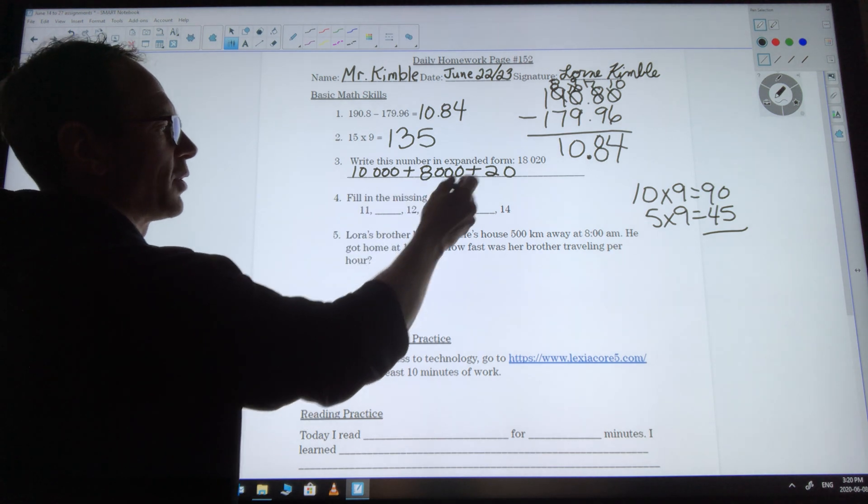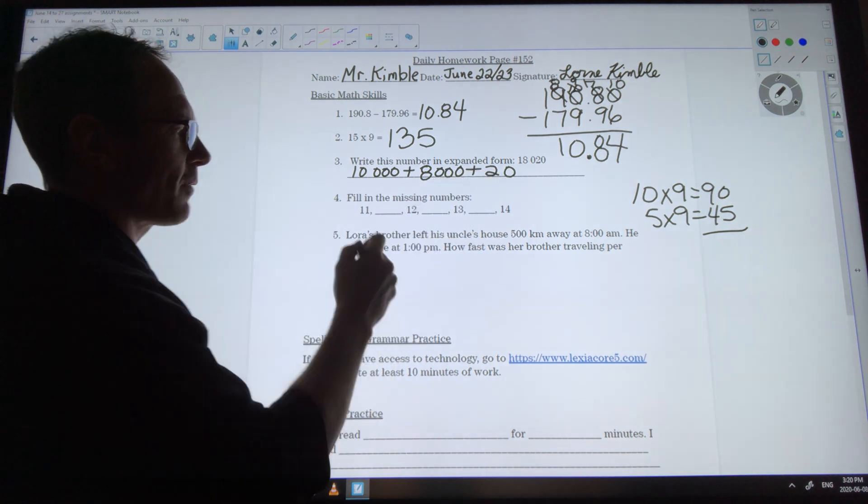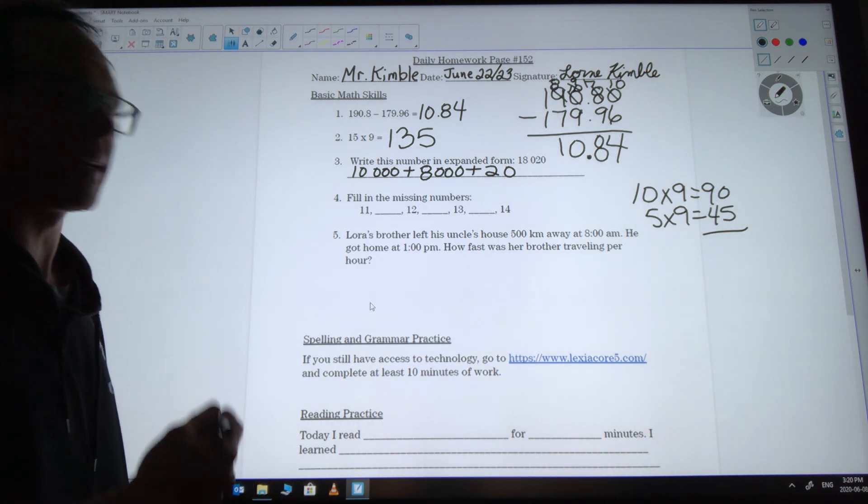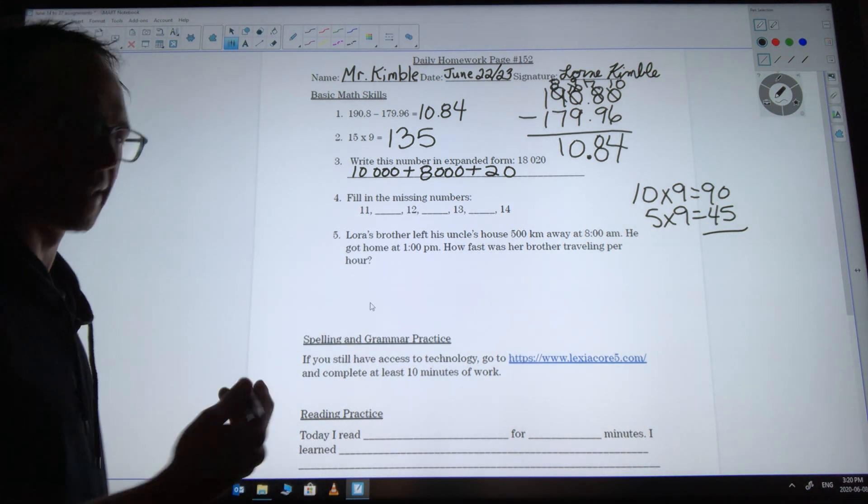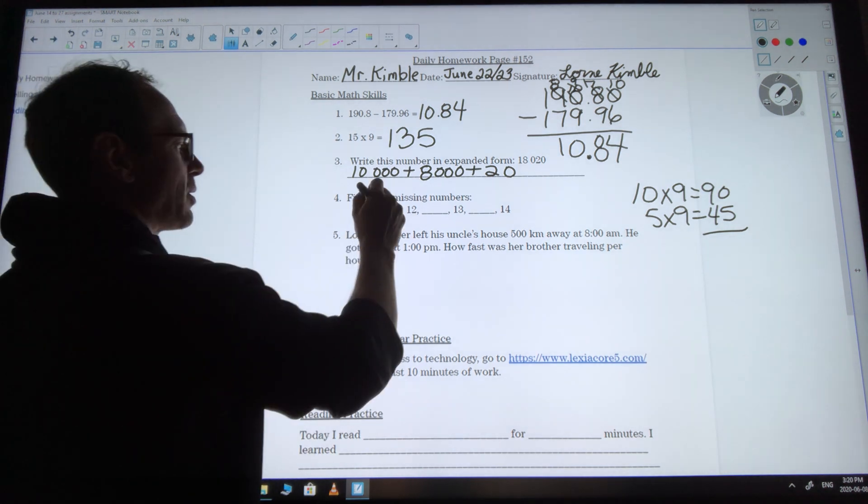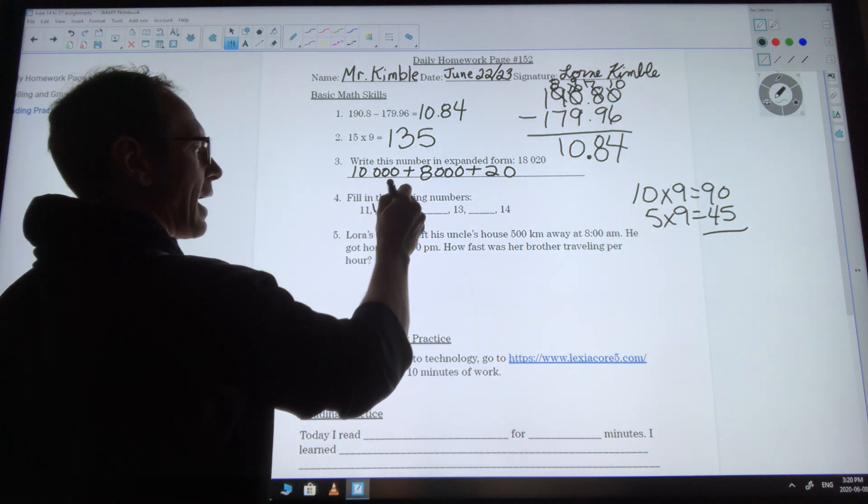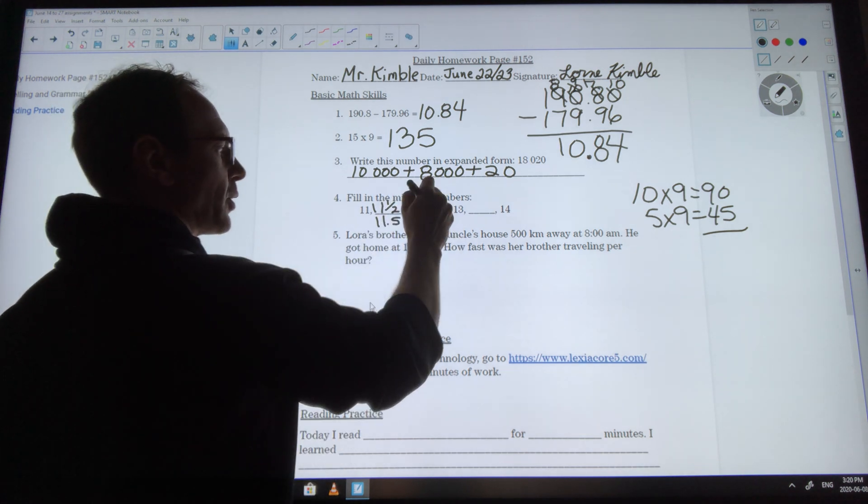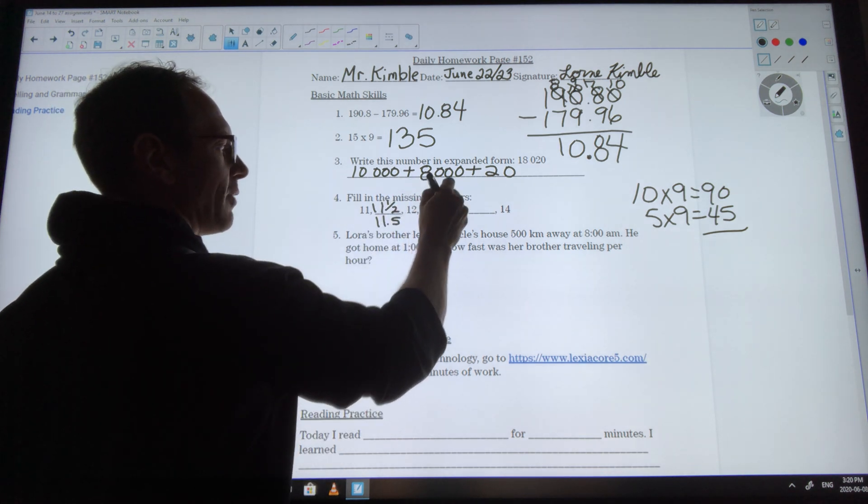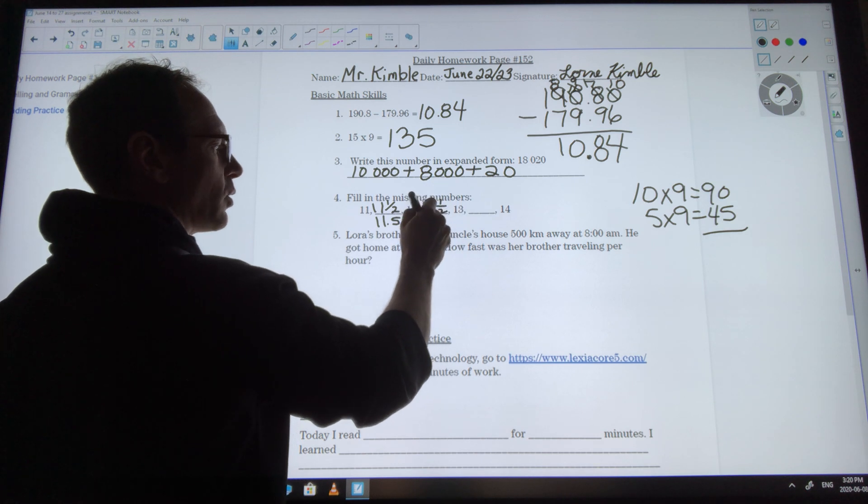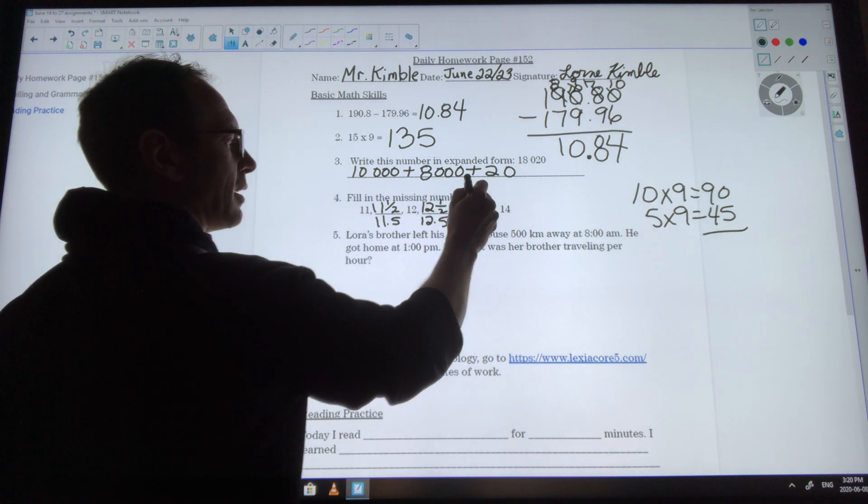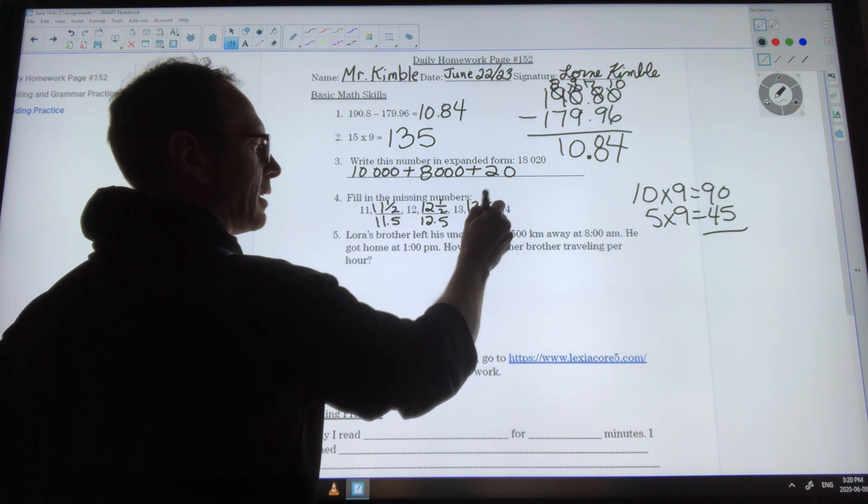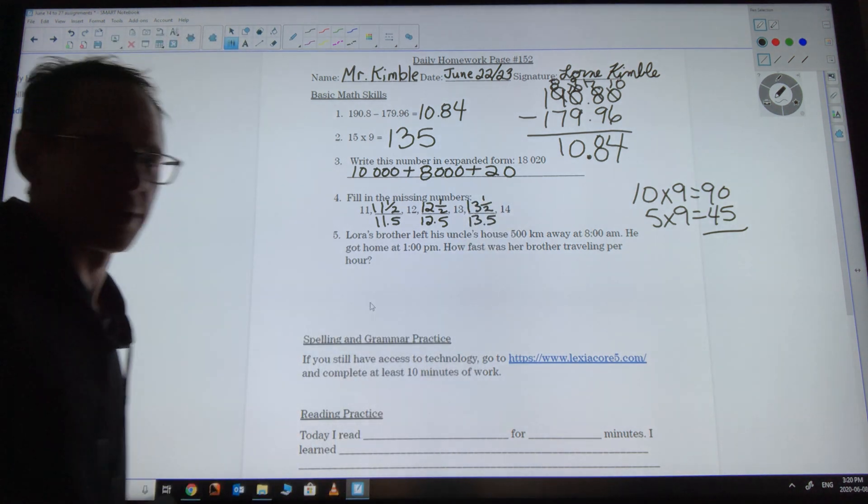Our numbers go 11, 12, 13, 14 but I need to know what's halfway between them. So you kind of have a choice. What's halfway between 11 and 12? Well that would be 11 and a half. Sometimes you can write it like this, 11 and 1 half, or you might choose to write it as 11 decimal 5. Both of those are correct. 12 and a half or 12.5, 13 and a half or 13.5 or 13 and 5 tenths.